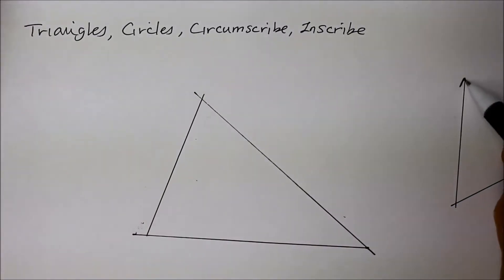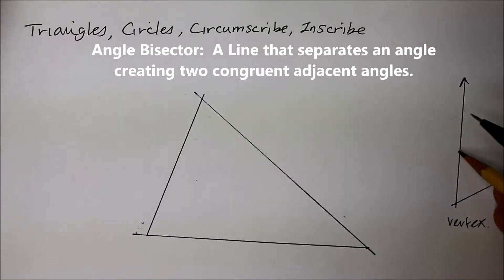If you're given two rays that are connected at an endpoint called a vertex, I'm not exactly sure what degree this angle is, but you can draw an exact line that will go through the middle of the two lines creating two equal angles.